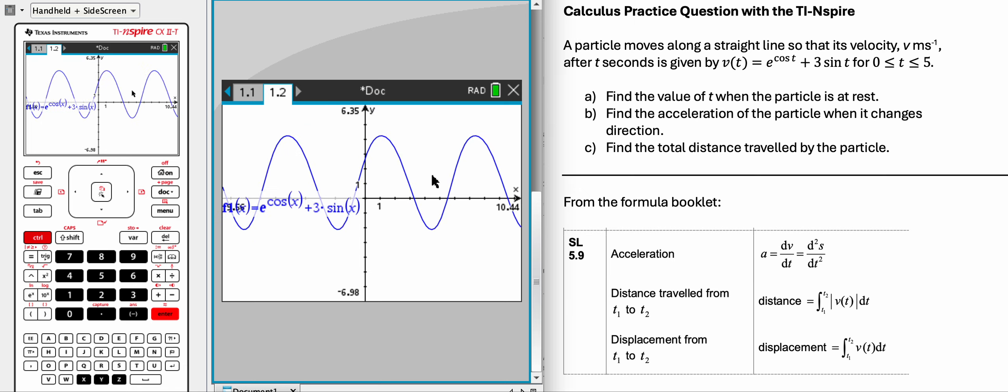Now notice the domain is 0 to 5, so you can ignore anything to the left of the y-axis, and it only goes to about right there, 5.